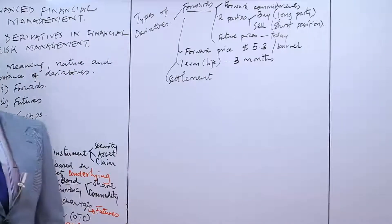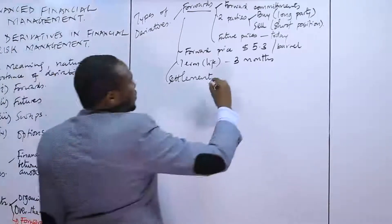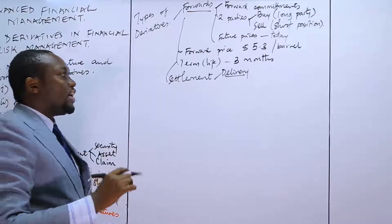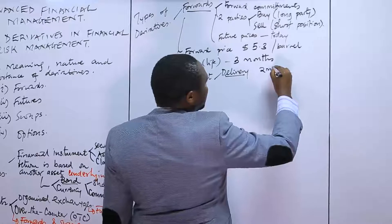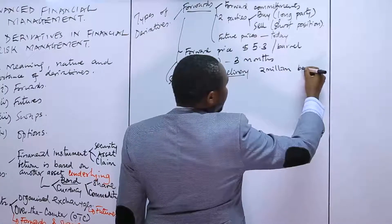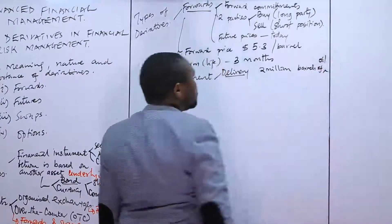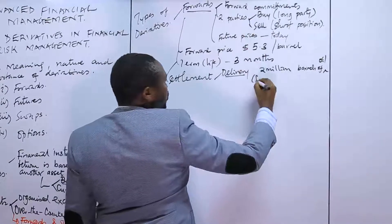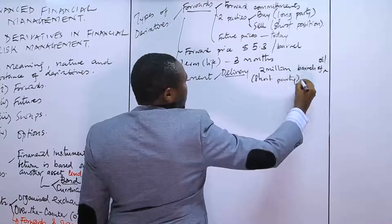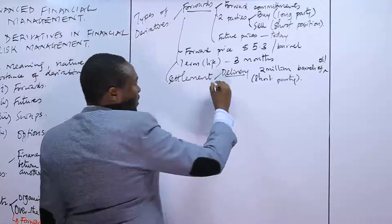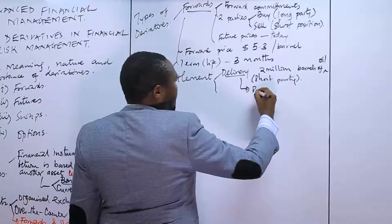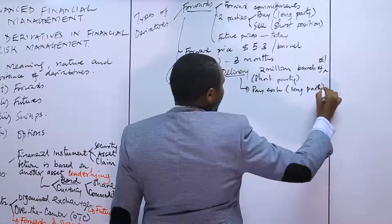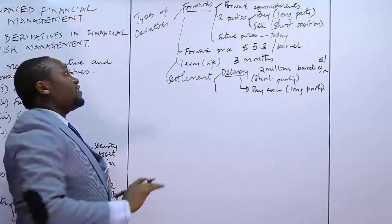A forward can be settled by two ways. The first is what we call delivery. The oil producer committed himself to deliver the 2 million barrels of oil — that is what he delivers. The short party, the seller, delivers. The long party, the buyer, will pay cash. Delivery and payment of cash — the cash is paid by the long party, the buyer. That is one method of settling the forward.